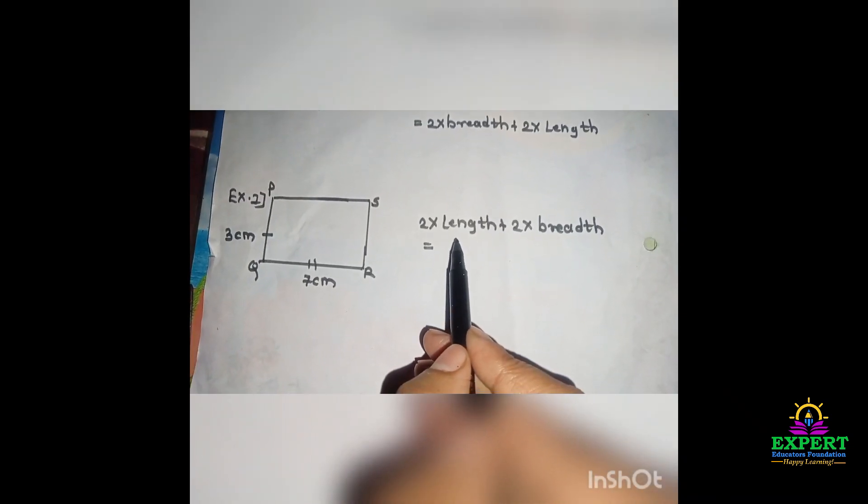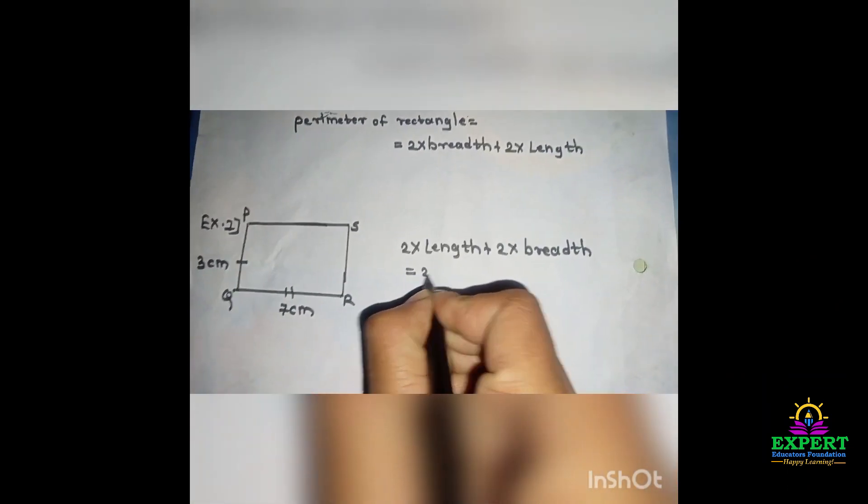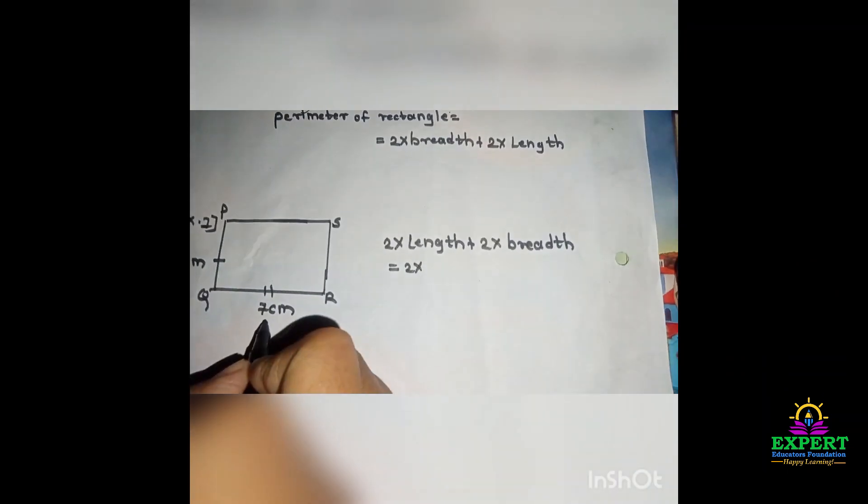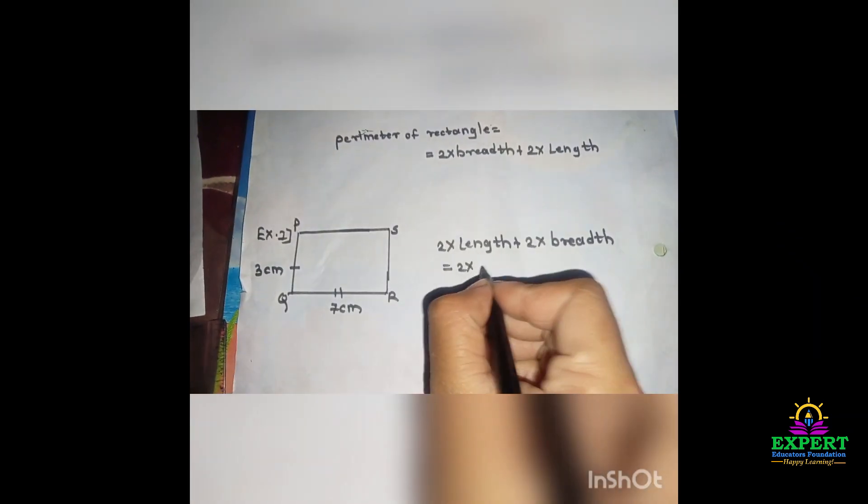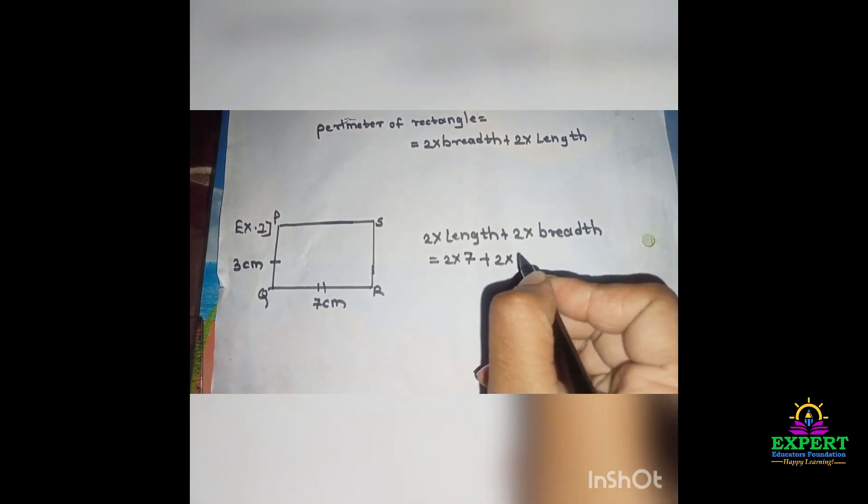This is the formula for perimeter of a rectangle. 2 into length - the length is 7 centimeters, so we write 7. Plus 2 into breadth - the breadth is 3 centimeters, so we write 3.